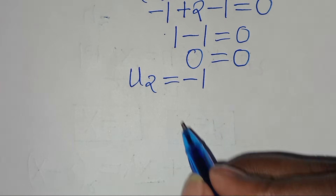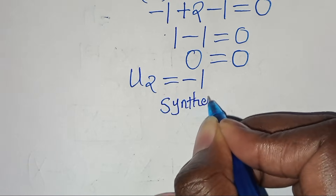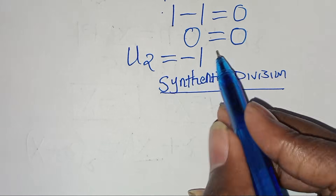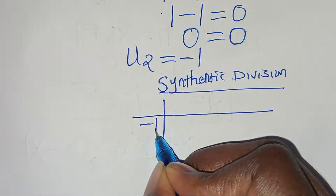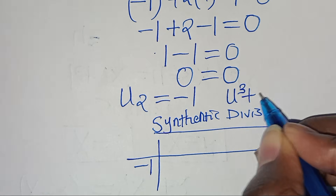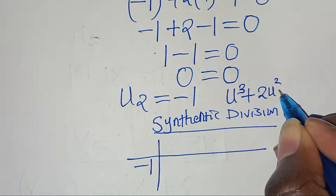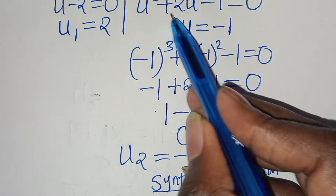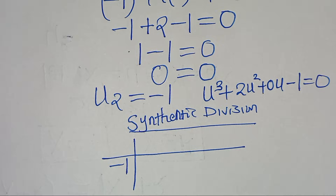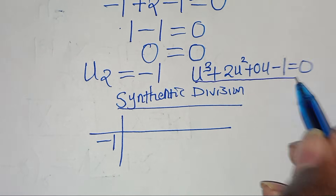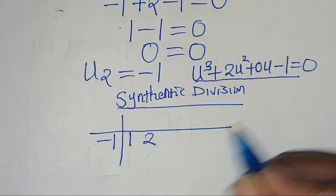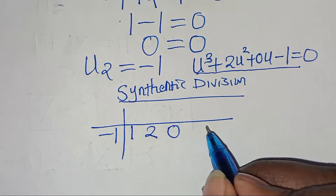Since we have u₂ equal to minus 1, let's use synthetic division to find the other values of u. The cubic function is u³ plus 2u² plus 0u minus 1 equals 0. The coefficients are 1, 2, 0, minus 1. Dropping the 1: minus 1 times 1 is minus 1; adding 2 plus minus 1 gives 1; minus 1 times 1 is minus 1; then 0 plus minus 1 is minus 1; minus 1 times minus 1 is 1; and minus 1 plus 1 is 0.